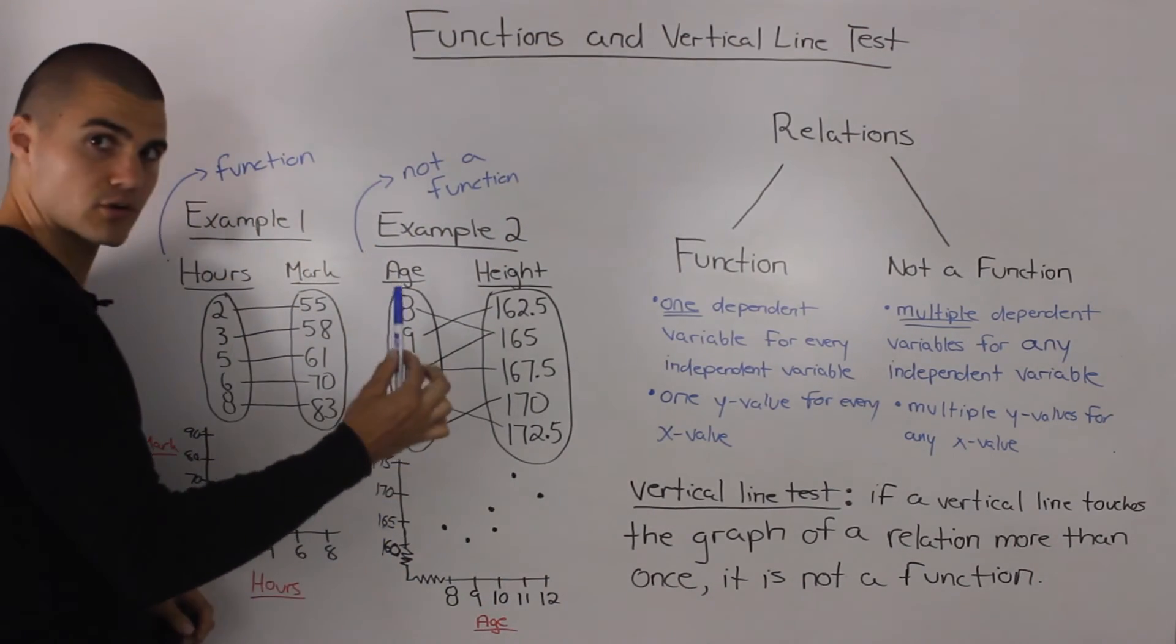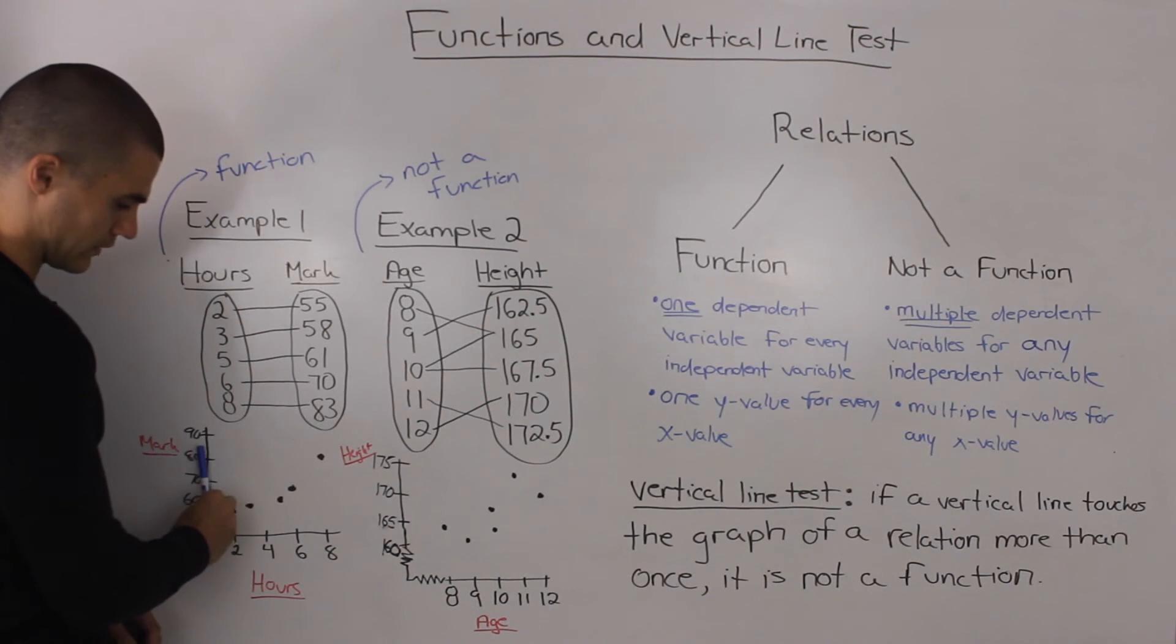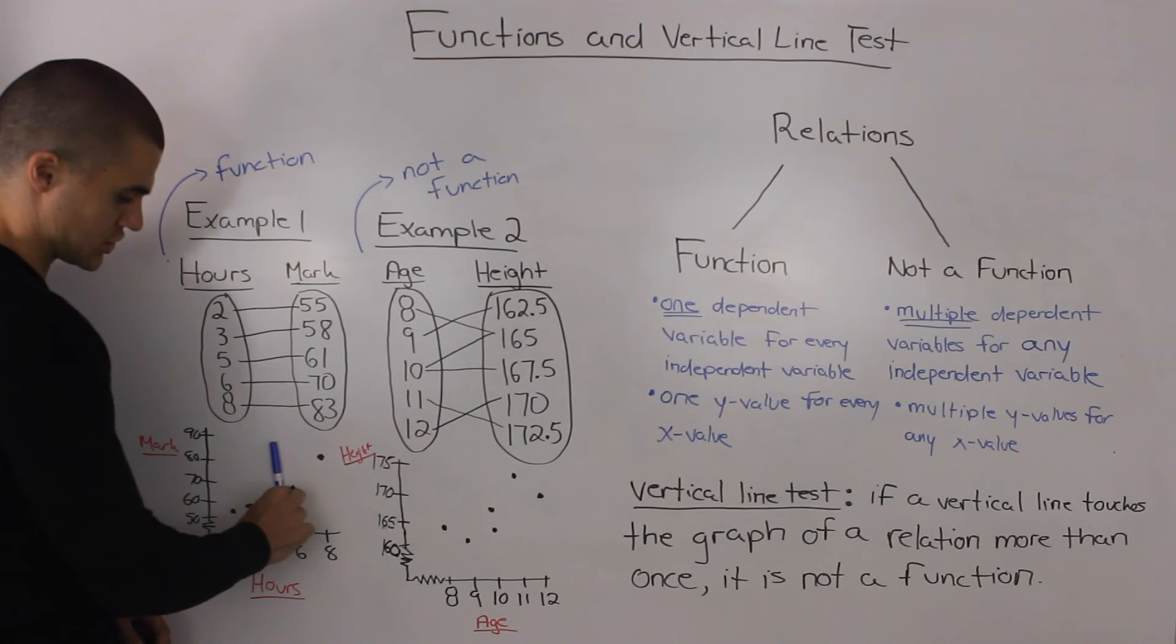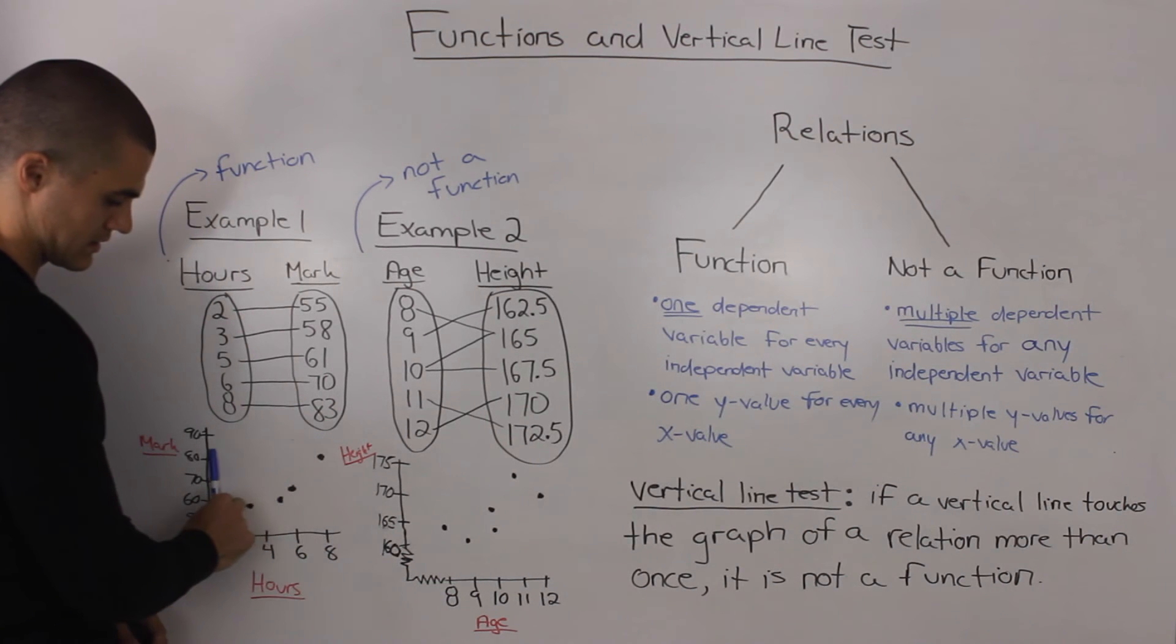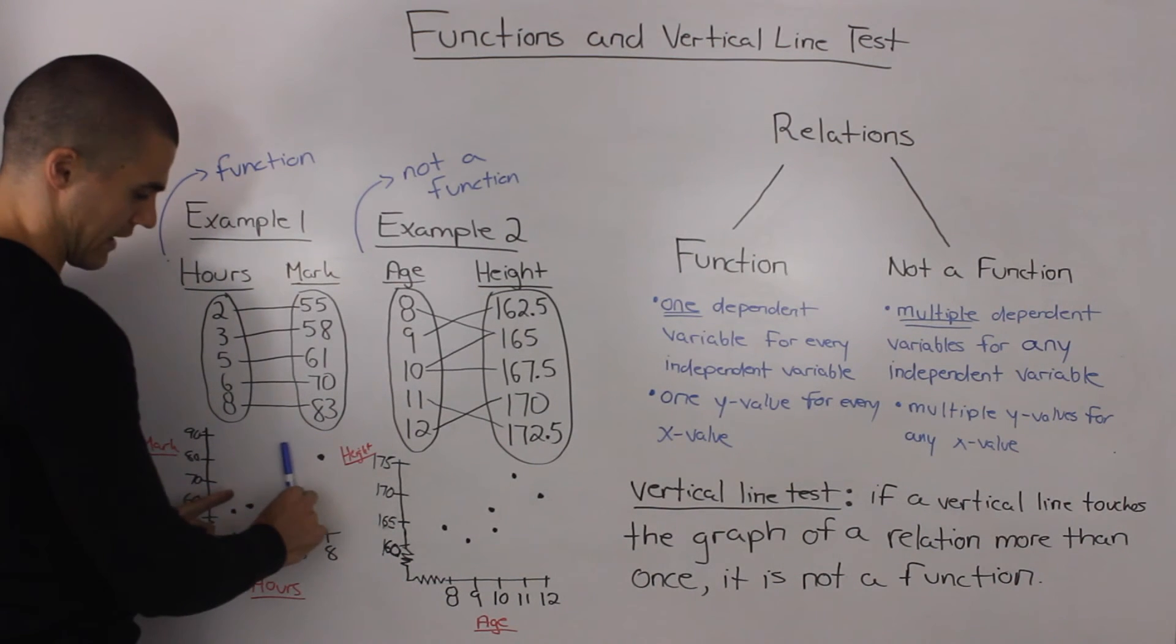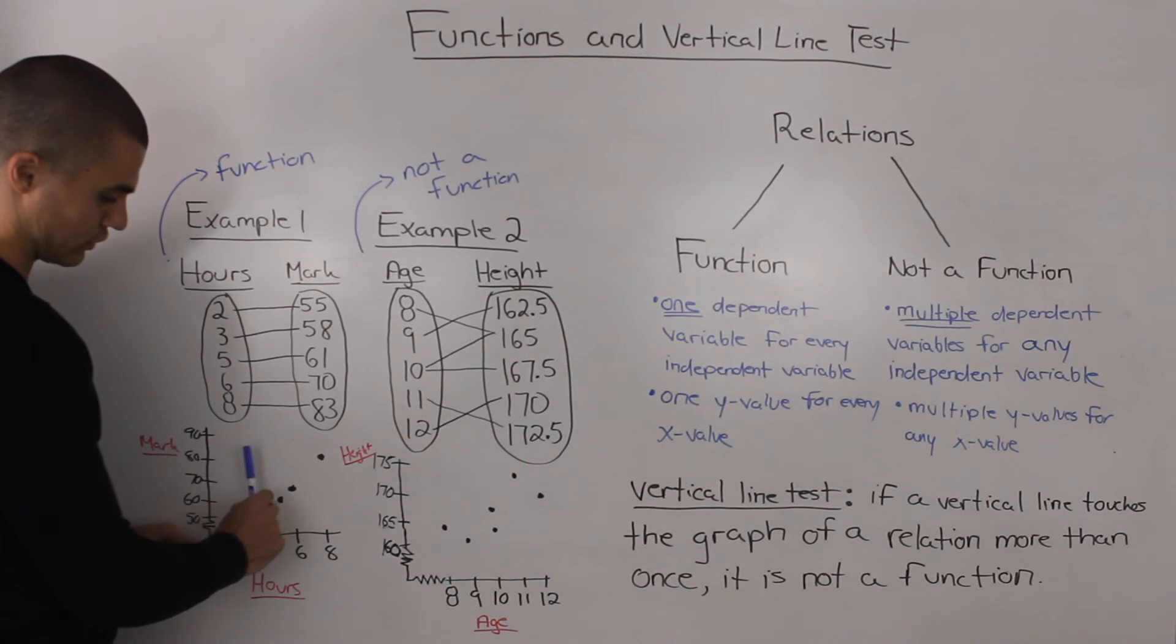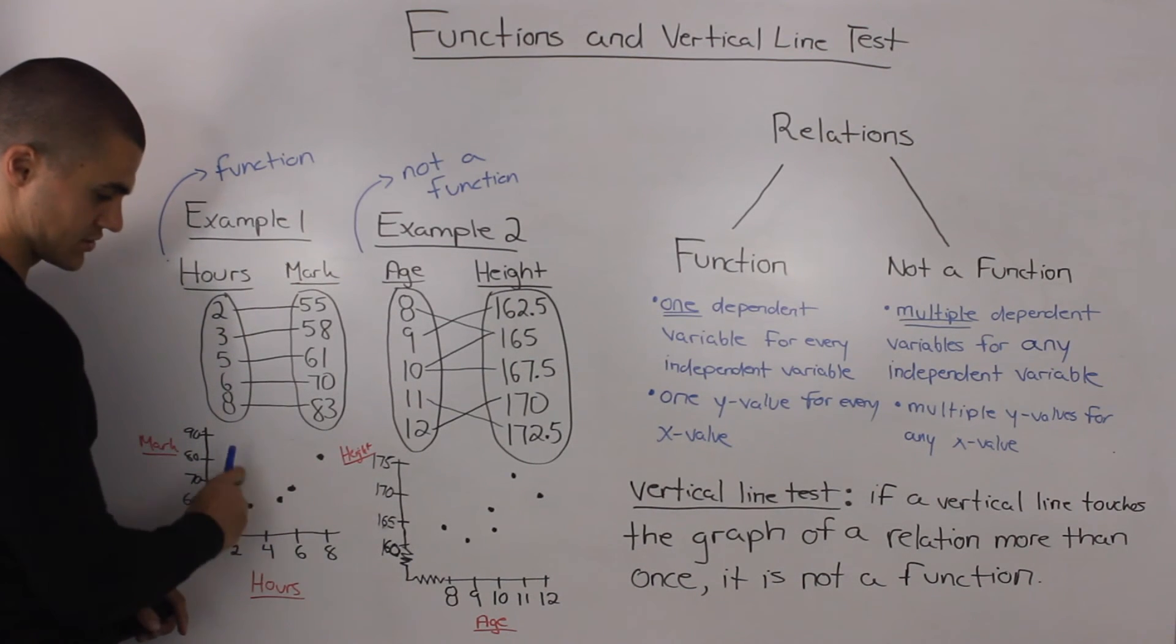So what do we mean by that? Well if you take a vertical line and you run it through the graph of a relation, notice how in this graph, you're only touching each point once. There is no point on the graph where you'll have the vertical line touching two parts of the graph or more.